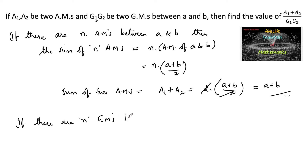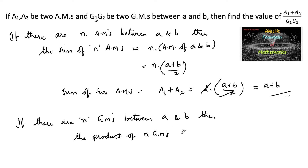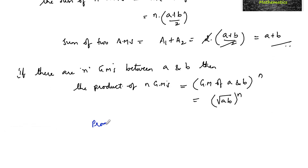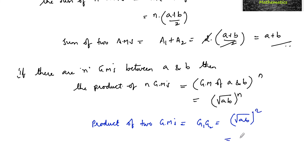Similarly, we know that if there are n geometric means between two given numbers a and b, then the product of n geometric means is equal to (√(ab))^n. So here there are two geometric means g1 and g2 between a and b, therefore g1 × g2 = (√(ab))^2 = ab.